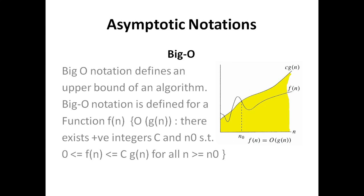then we say f(n) = O(g(n)) if there exist positive constants c and n₀ such that f(n) is always less than or equal to c·g(n) for all n greater than or equal to n₀. This means c·g(n) will always be greater than f(n), so c·g(n) is the upper bound of your algorithm for all n greater than n₀.